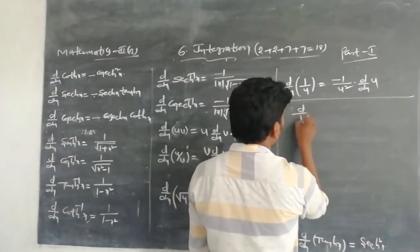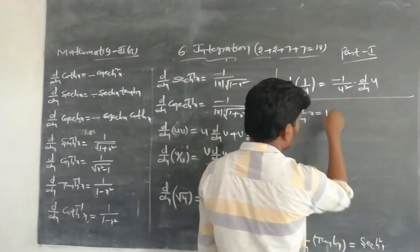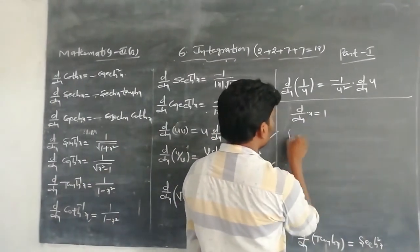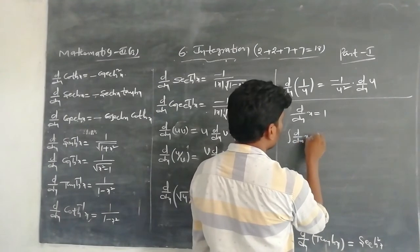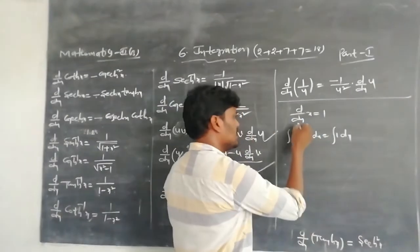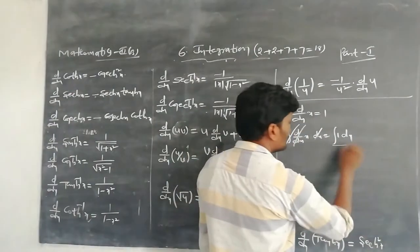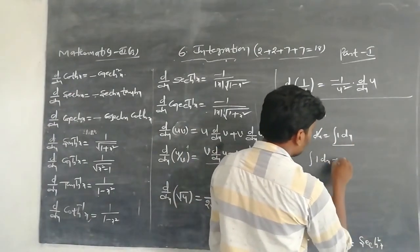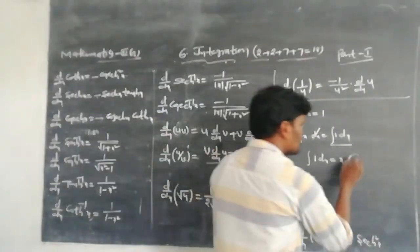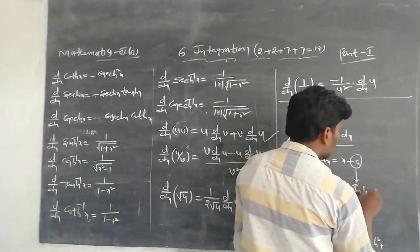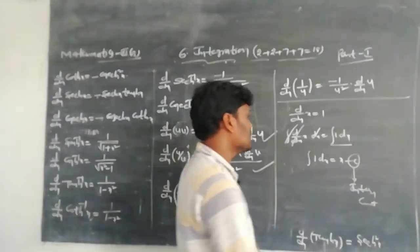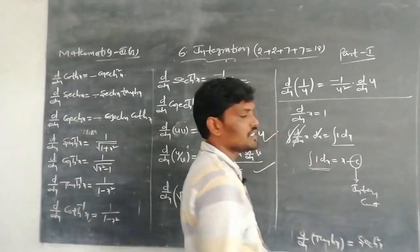Suppose the derivative of x is 1. Applying integration on both sides: ∫(d/dx of x) dx = ∫1 dx. Here, derivative and integration cancel each other. You get ∫1 dx = x + c, where c is the integral constant.